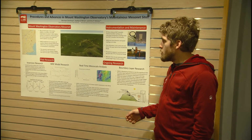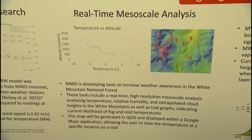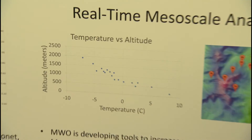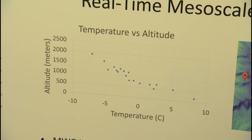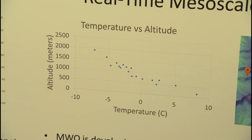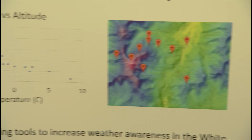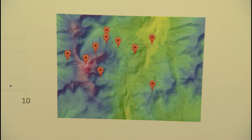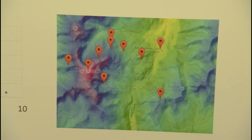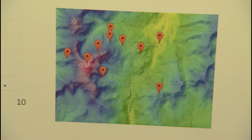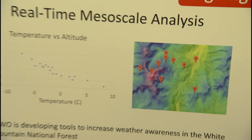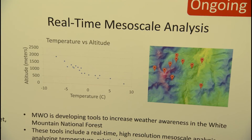Some ongoing research that we're doing: we're currently creating a real-time mesoscale analysis, which is essentially an interpolation of what the temperature and relative humidity are between the sites. This is helpful for hikers who are going above treeline and want to know what they're hiking into specifically on the trail, and maybe not right at a site.